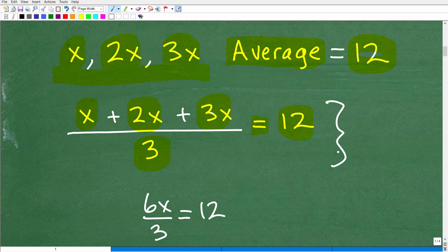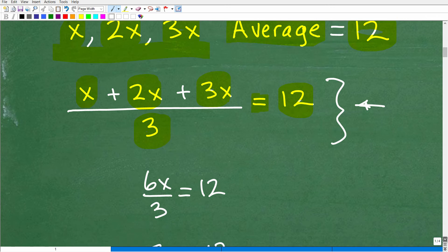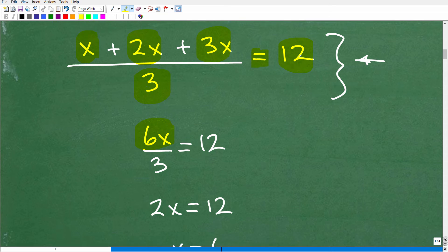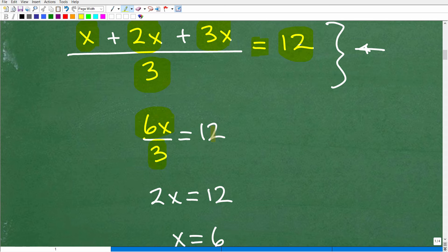All right. Now, of course, at this point, you need to know how to solve basic equations. But let's go ahead and do this now. So x plus 2x plus 3x. Well, 2x and 3x is 5x plus another x is 6x. So our numerator there is 6x over 3. That's going to be equal to 12. So 6x divided by 3. 6 divided by 3 is, of course, 2. So we have 2x is equal to 12.